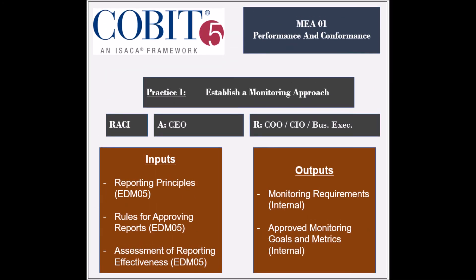The process has five practices, and the first practice is to establish a monitoring approach. The entities responsible for this practice include the chief operating officer, the business executives, and the chief information officer. The entity held accountable is the chief executive officer. The practice receives several inputs that include the reporting and communications principles, the rules for approving reports, and the assessment of reporting effectiveness, all from the EDM-5 process.